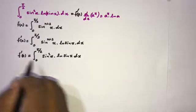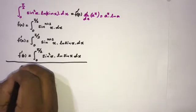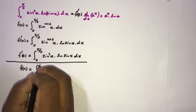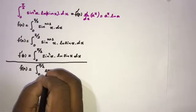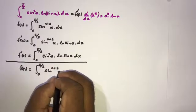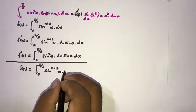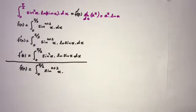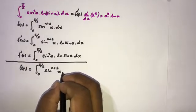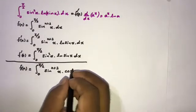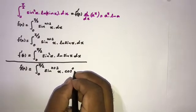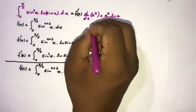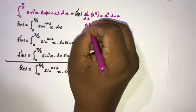So our integral equals f'(0), and we need to evaluate that. Taking f(n) equal to the integral from 0 to π/2 of sin^(n+2)(x) dx, we can use the Beta function. We multiply by 1, writing it as cosine^0(x) dx.